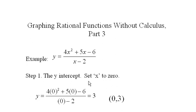And again, we set x to 0 to find the y intercept. And when we set x to 0, we get negative 6 over negative 2, which gives us positive 3. And there's our y intercept, that was pretty easy.